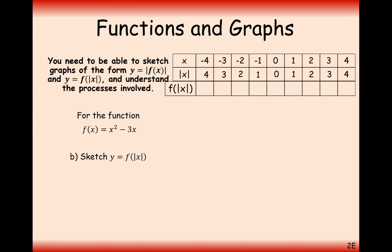We then substitute these modulus x-values into our function. 0 comes out at 0, 1 at −2, 2 at −2 as well, 3 at 0, and 4 at 4. On the left-hand side we're substituting the same numbers as before, so we can just copy the results across. Effectively, the graph on the right-hand side is going to stay as it was, and then that right-hand side gets copied over to the left-hand side.